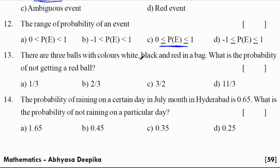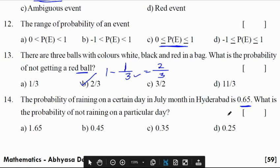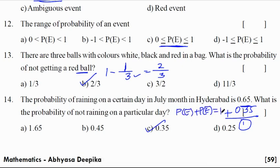There are 3 balls with colors white, black and red. What is the probability of not getting a red? So getting a red is 1 by 3, there are 3 balls, red ball is 1. Not red is 1 minus 1 by 3 which is 2 by 3. The probability of raining on a certain day in July month in Hyderabad is 0.65. What is the probability of not raining on a particular day? 0.35 is the answer. Because we discussed in the first problem, probability of event plus probability of not event will be equal to 1. So 1 minus 0.65 is 0.35.